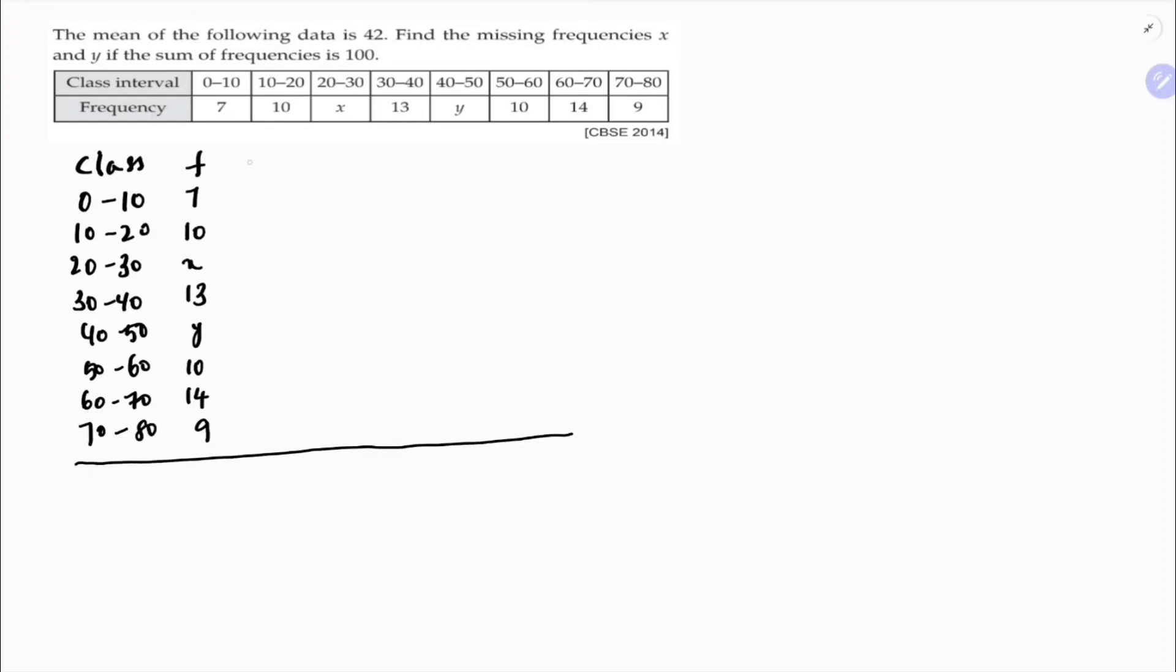So here now for mean compulsory we need to find class mark. Xi is class mark. So before class marks I will write the value of h, h is class size. Class size subtract like this, 70 minus 60 which is 10, so class size is 10.